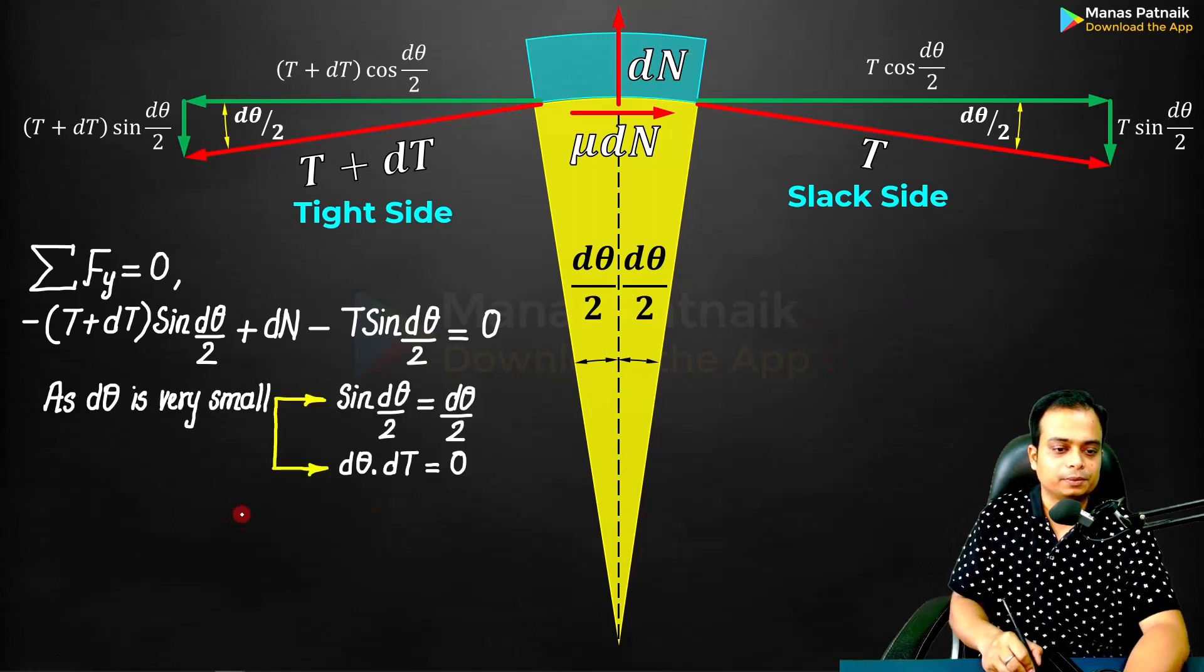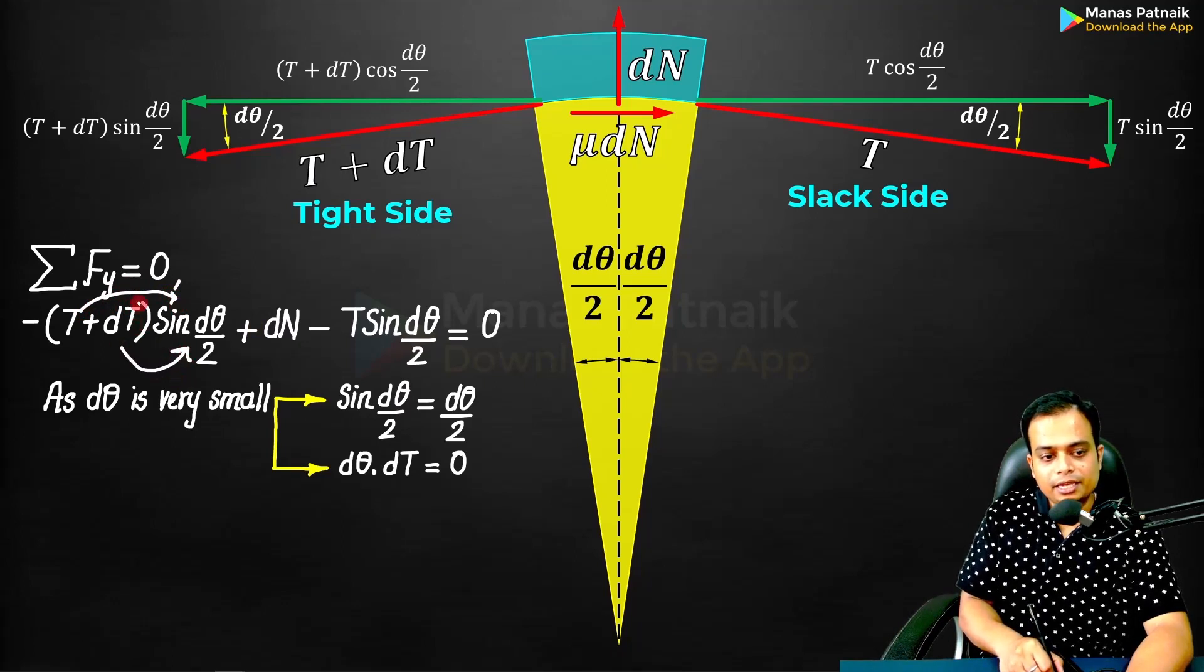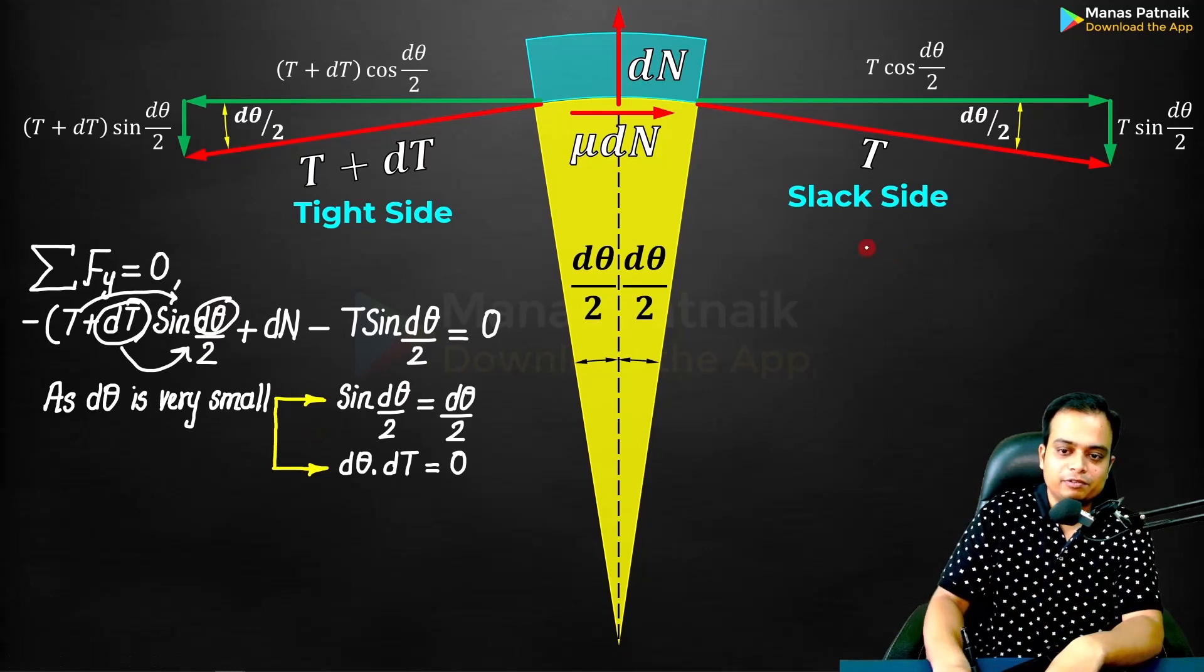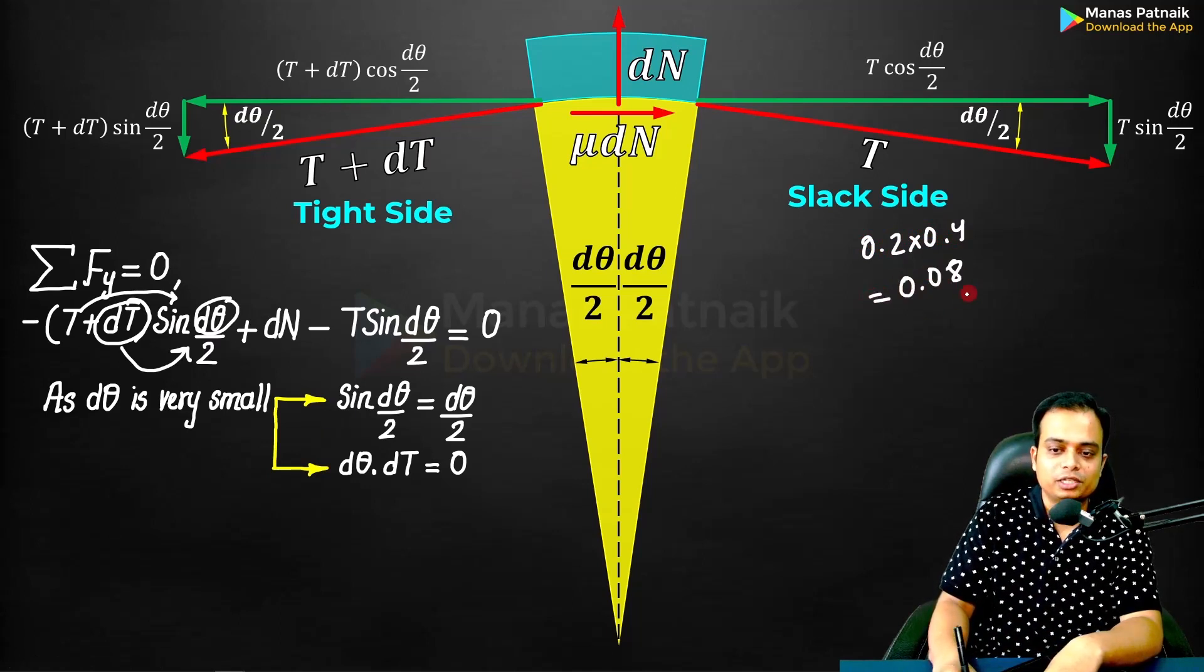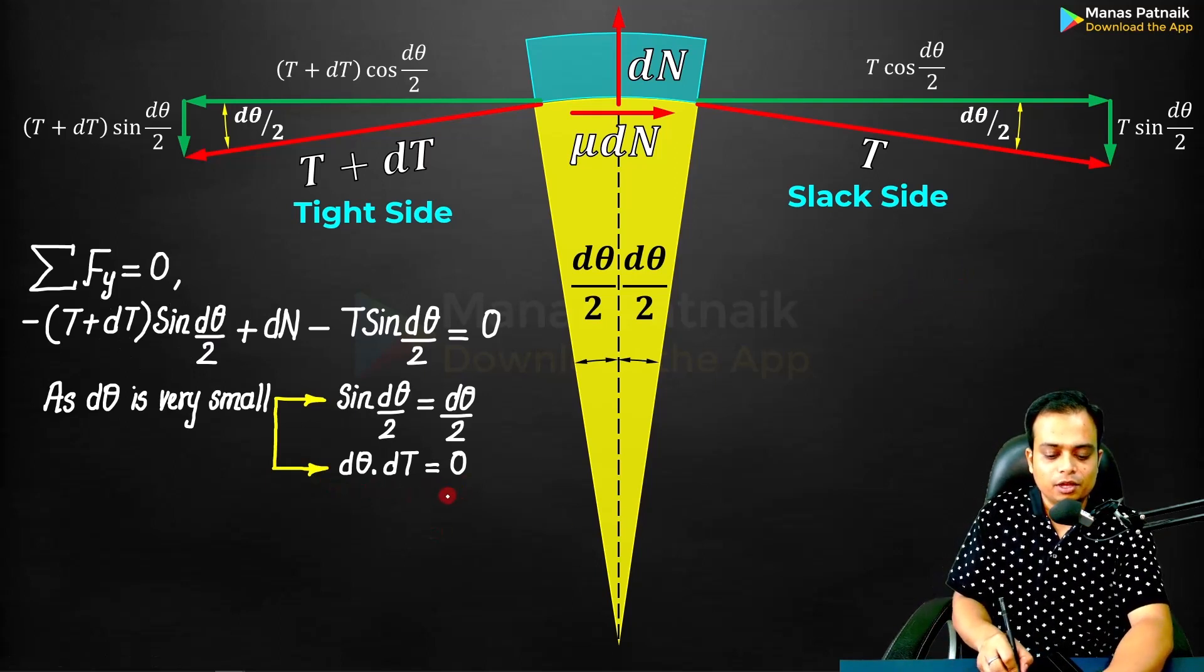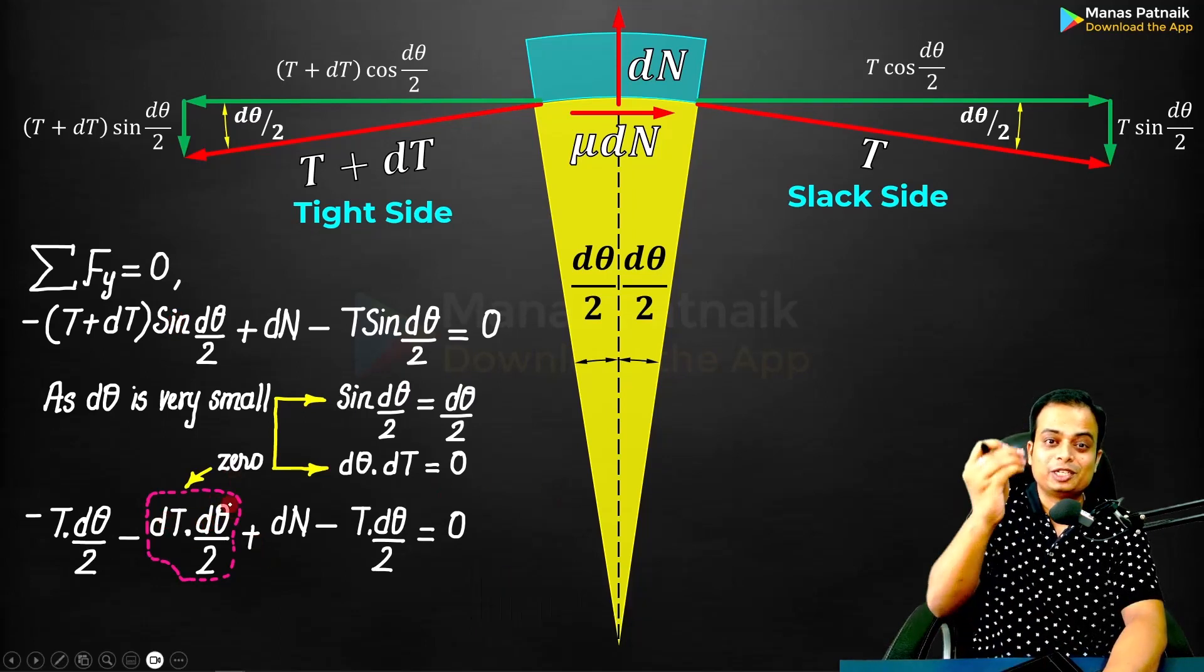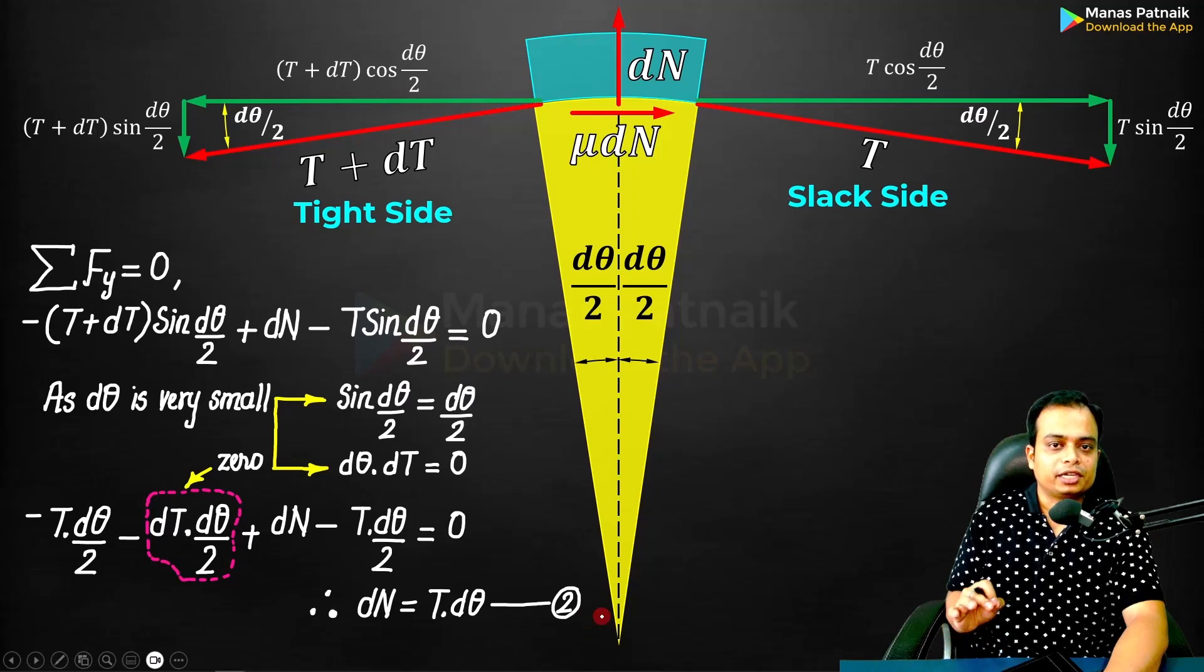Again over here, we apply the same logic. When θ tends to 0, sin θ can be written as θ. It is this logic we apply over here. You have to multiply T with sin(dθ/2) and dT with sin(dθ/2). Here dT and dθ will be multiplied, so two small quantities when multiplied will create an even smaller quantity. dθ into dT will be zero. When you apply this logic, the equation reduces to this. The multiplication of two extremely small quantities is zero. The equation simplifies to dN = T dθ. This is our equation number two.